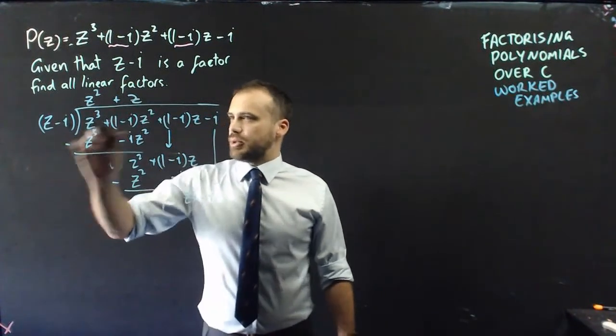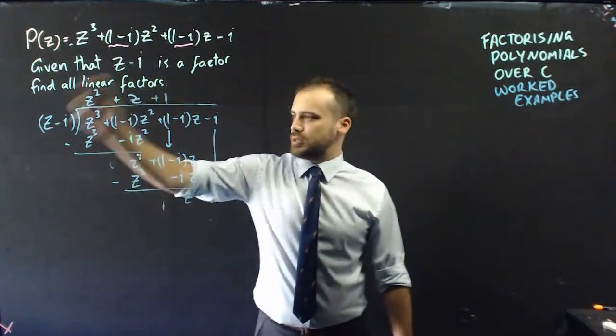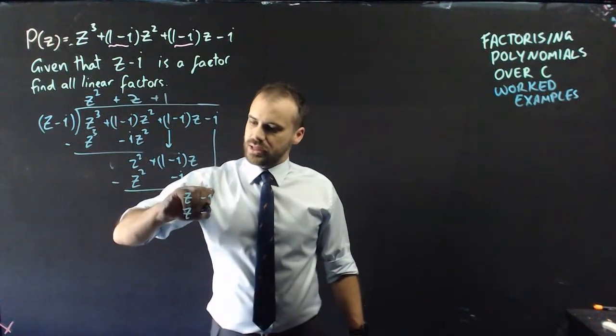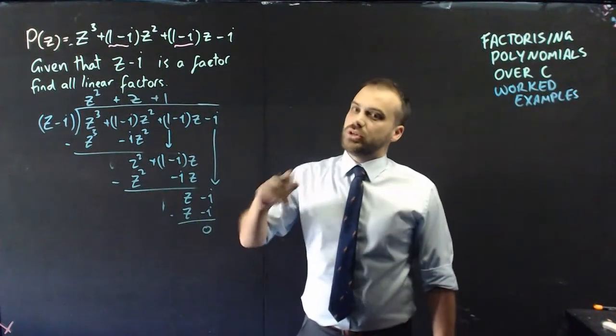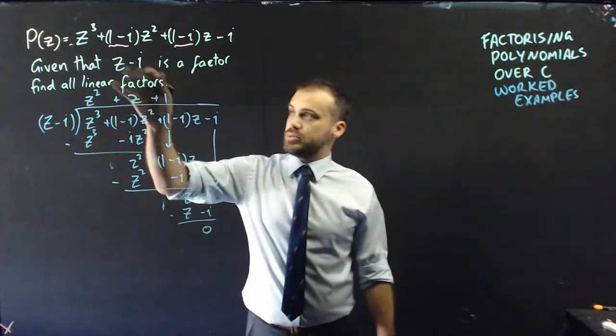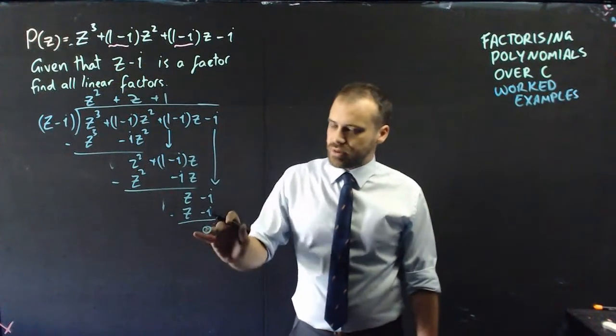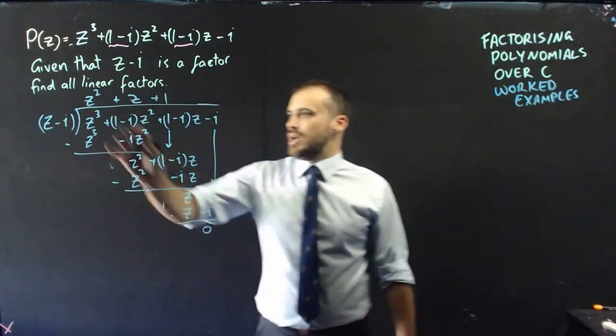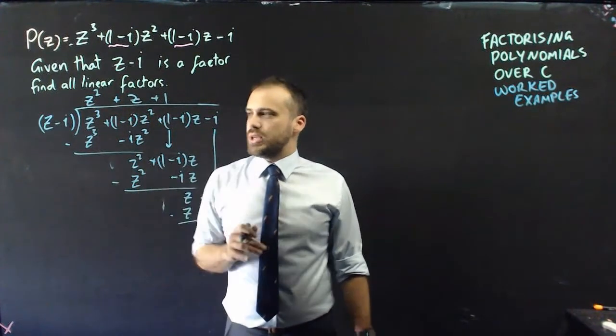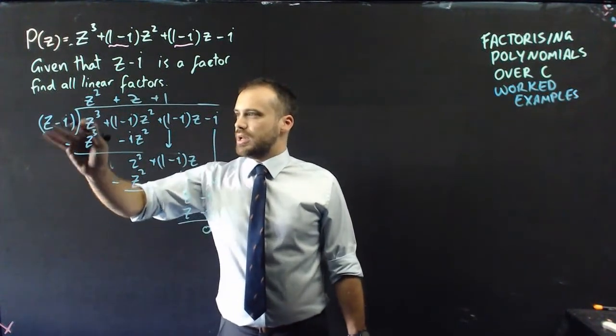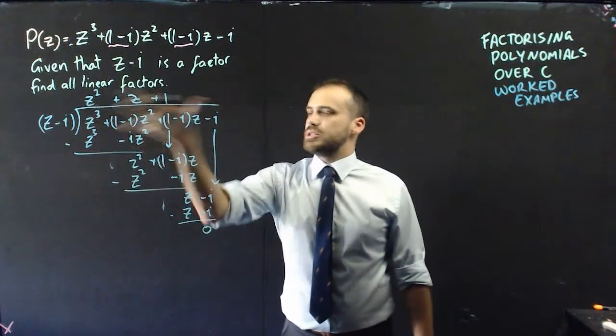z divided by z is 1. 1 times that is z. 1 times that is negative i, and no remainder, which does two things. It confirms that z minus i is a factor, because we have remainder 0, and it also gives us this thing here. And, now that we have that, we can rewrite this as z minus i times all of that.